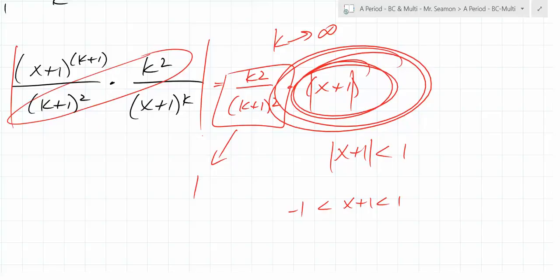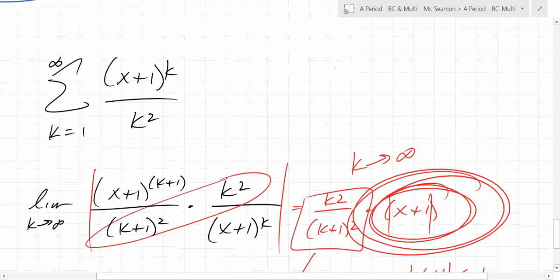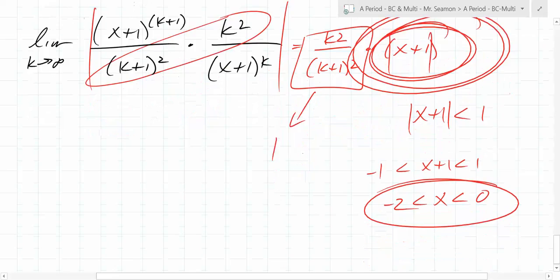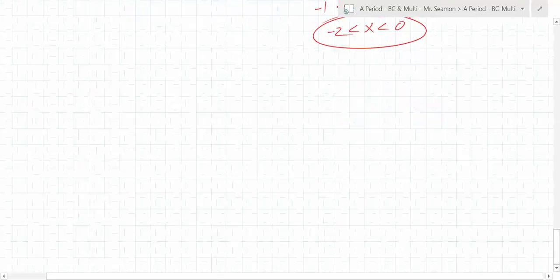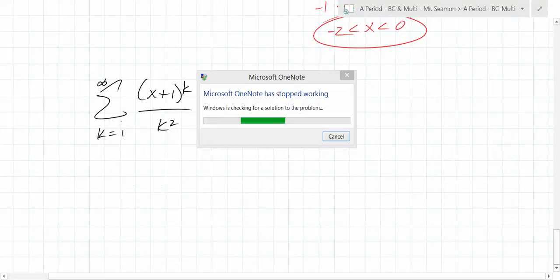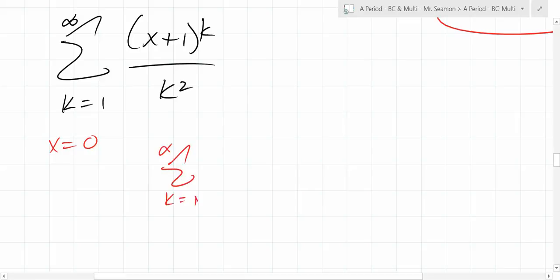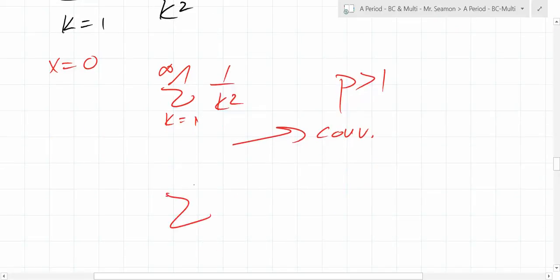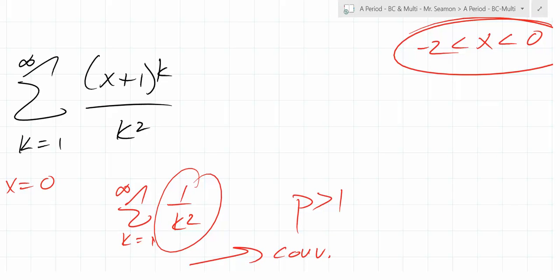That eliminates answer choices A and B because they go from 0 to 2, not negative 2 to 0. But you also have to test the endpoints. When x equals 0, you get the sum from k=1 to infinity of 1/k² — that's a p-series with p greater than 1, so it converges. When x equals negative 2, you get the sum of negative 1/k², which also converges. So it has to be E, because E is the only answer choice that contains both endpoints.